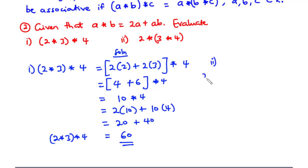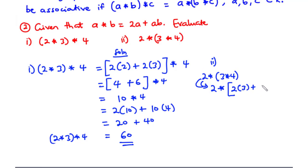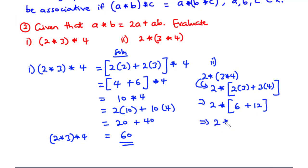Now let's solve for (II), that is 2 star (3 star 4). We are going to solve what's in the bracket first. Using the rule with A equal to 3 and B equal to 4, we have 2 times 3 plus 3 times 4. 2 times 3 is 6, and 3 times 4 is 12. So 6 plus 12 is 18. Now we have 2 star 18.